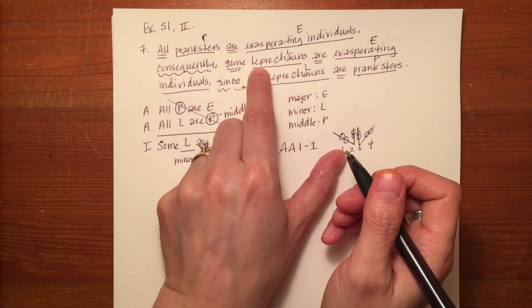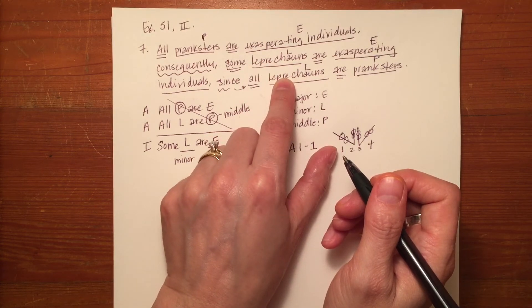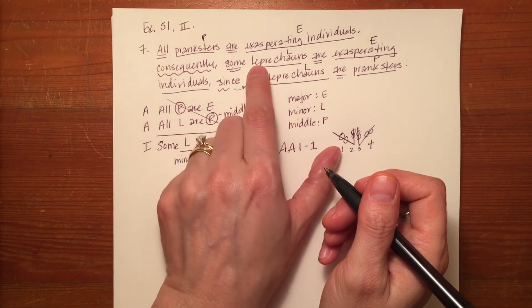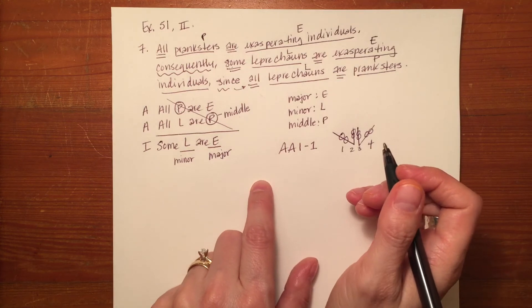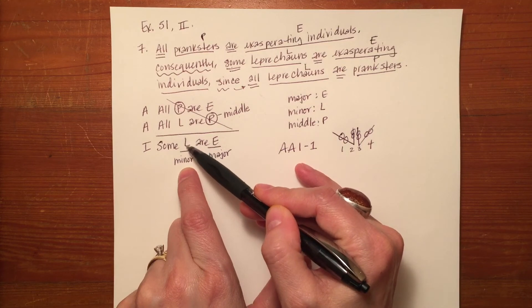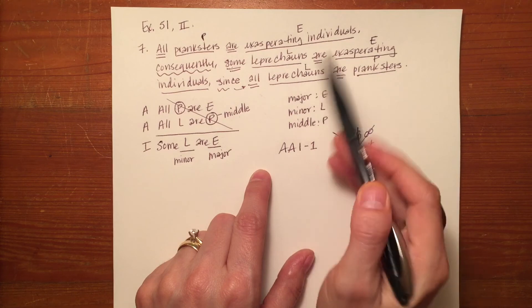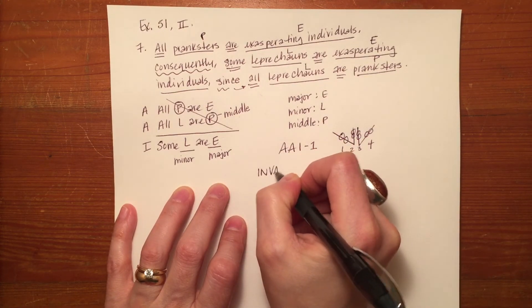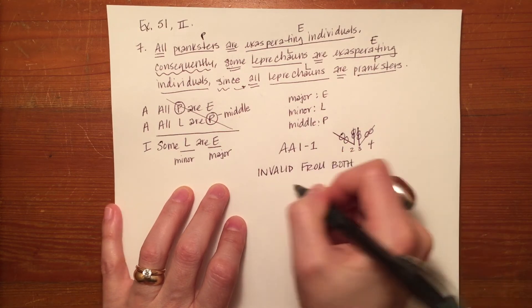So if it stood for anything else, if that minor term L was anything else but something that doesn't exist, if it was light switches or lamps or whatever, that would have made this argument conditionally valid because the condition that L or the minor term, they're calling it S because it's the minor term, would have to exist. But because it doesn't, it doesn't meet that condition and therefore it's invalid from both perspectives.